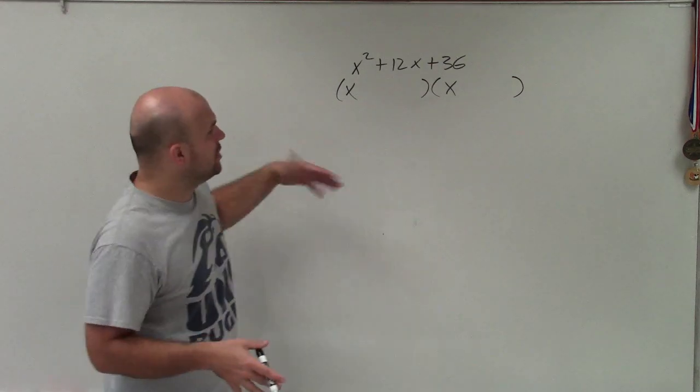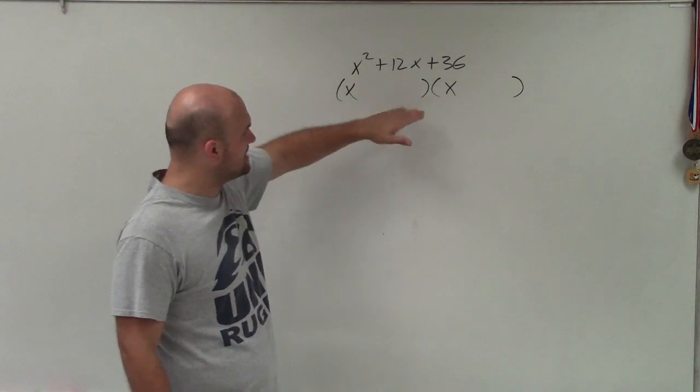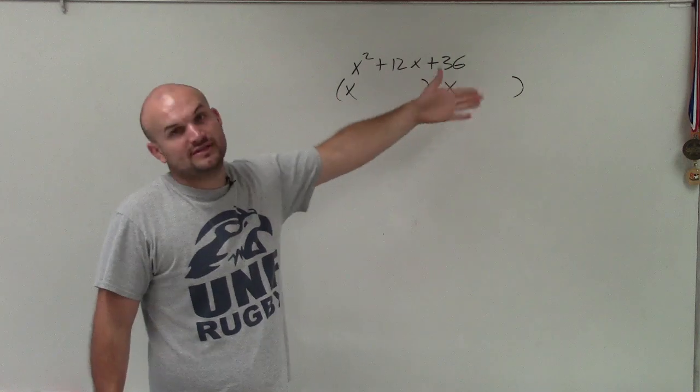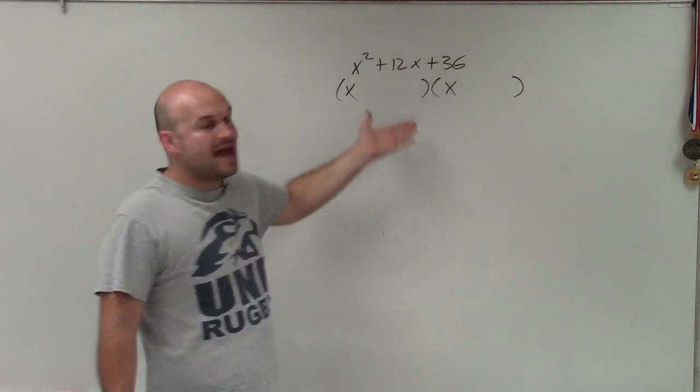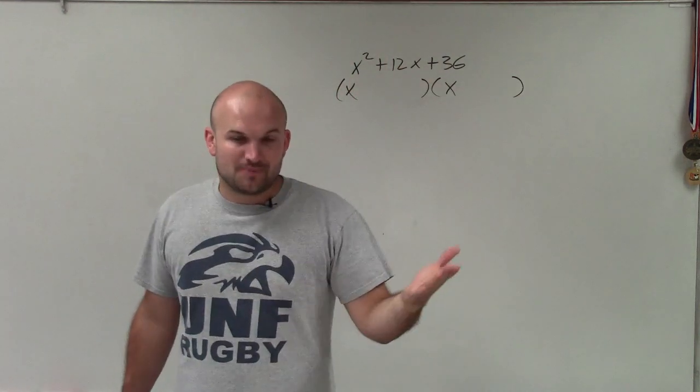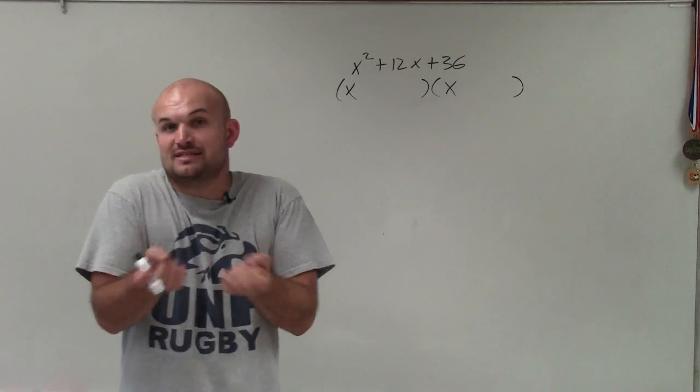Because we know now we have x times x, we want to look for what two numbers multiply to give us 36 that are going to add to 12. The easiest thing to think about is: is 36 a squared term?